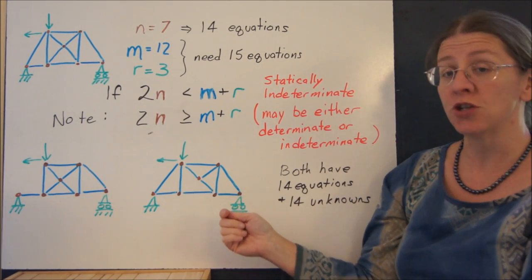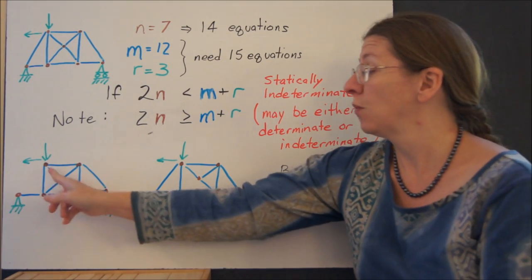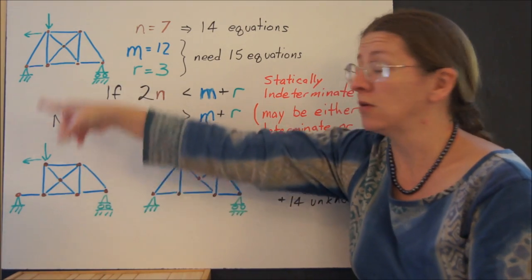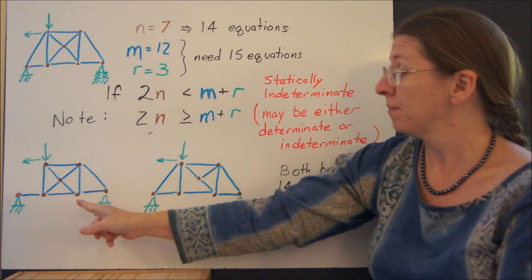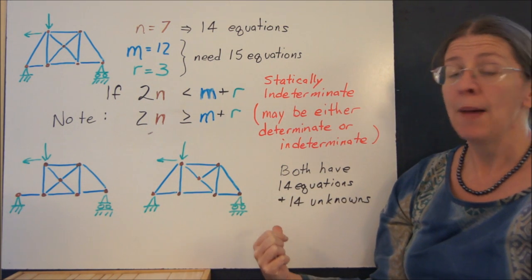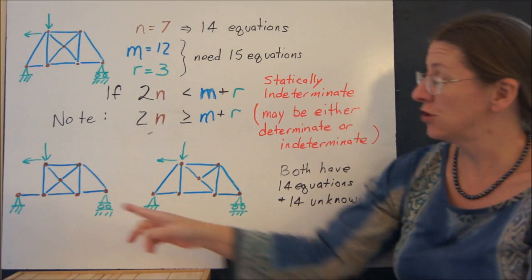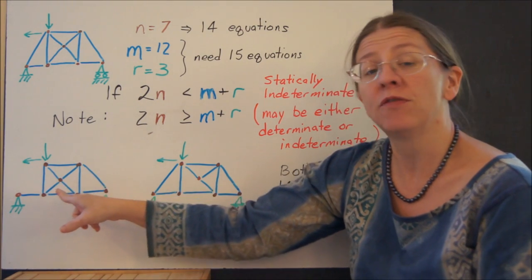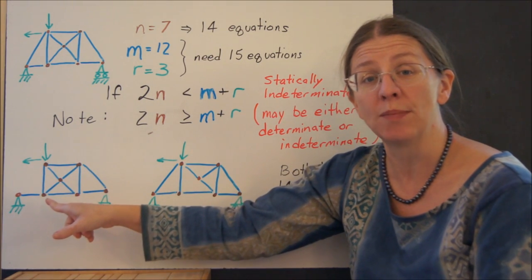If you look at this one where I removed the outside left piece, that has now 14 equations and 14 unknowns. But it's not going to work. As you work your way through, you have this joint in the middle that has four members, and there's no way to solve for it.